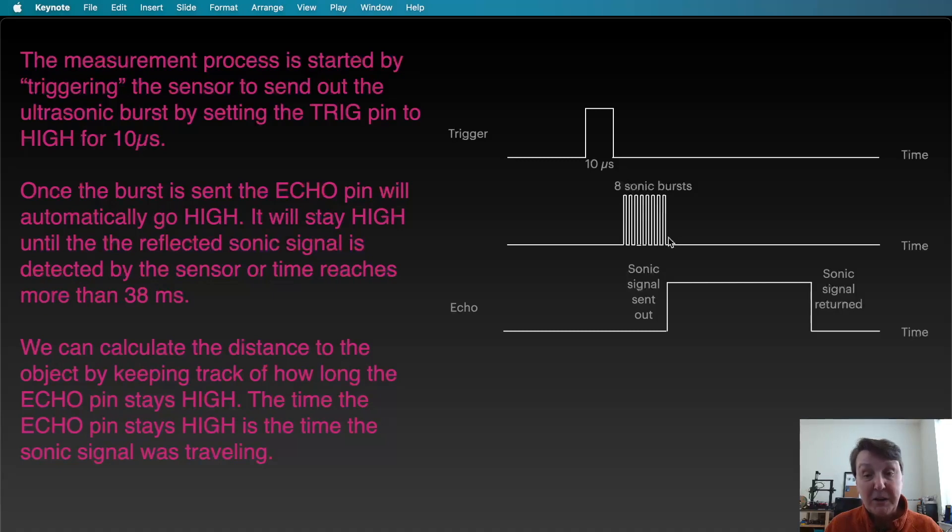Here's the 10 microseconds of sending the trigger pin high and then we'll have eight sonic bursts come out of the transducer and when that's completed the echo pin will automatically go to high and it'll stay high until it detects the sound coming back, being reflected back from the object.